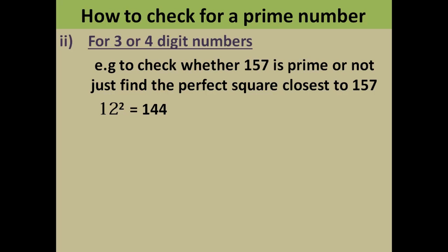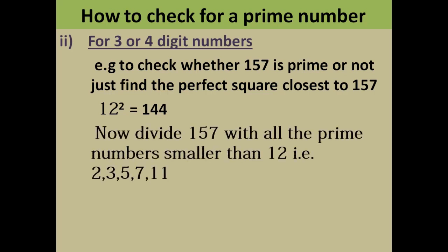Now find all prime numbers smaller than 12. The prime numbers smaller than 12 are 2, 3, 5, 7, and 11. Then divide 157 by all these prime numbers. If it is divisible by any of them, then it is not a prime number. If it is not divisible by any of them, then it is a prime number.